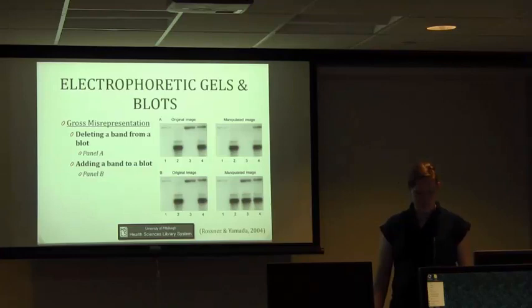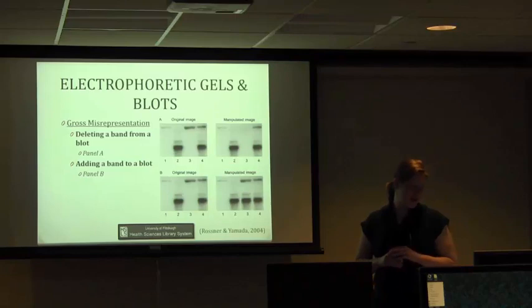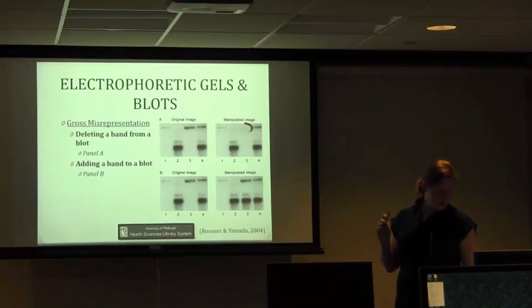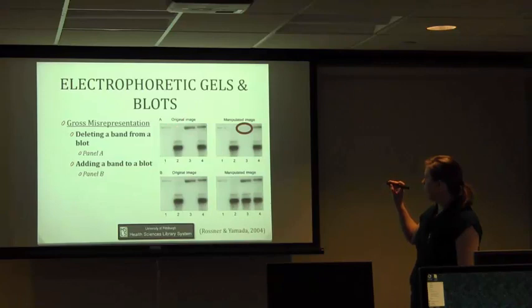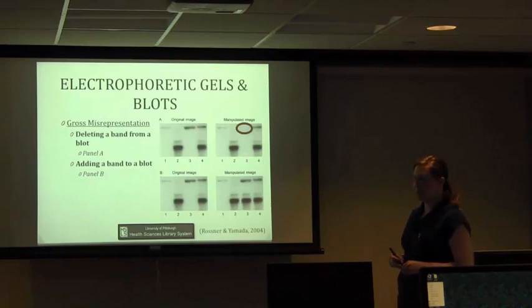Let's go into some specific examples that were found in this Rossner paper about misrepresentation of data. The author did say that all of these were taken from, well, the images aren't from original cases, but the thought behind them is. These were things they actually encountered as an editor of Journal of Cell Biology. First, they have a subcategory of gross misrepresentation. This is something we hope nobody is doing because this is what they would consider more intentional. The first one is deleting a band. In this figure from the paper, you can see that up here in panel A, the original image had a band here, but they deleted it here.